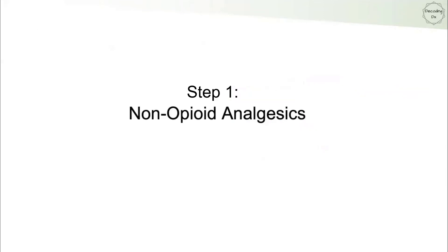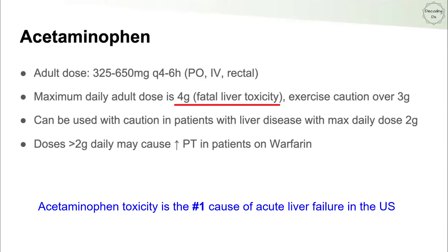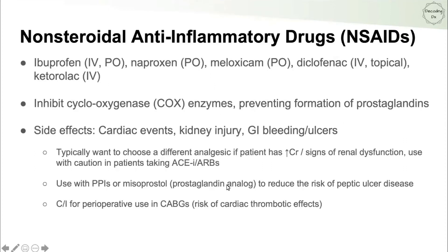For non-opioid analgesics — step one of the WHO ladder — acetaminophen is commonly employed. It can be given oral, IV, or rectal. The maximum daily adult dose is four grams, as higher doses can cause fatal liver toxicity. Use caution over three grams. In patients with liver disease, it can still be used but with a maximum daily dose of two grams. Also, doses greater than two grams per day may increase PT in patients on warfarin.